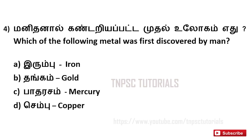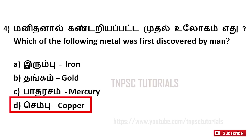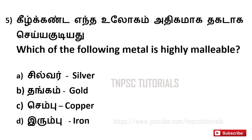Fourth one: which of the following metals was the first discovered by man? A. Iron, B. Gold, C. Mercury, D. Copper. And the answer is D. Copper.